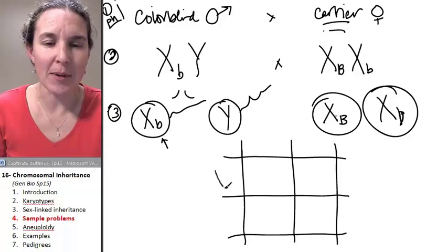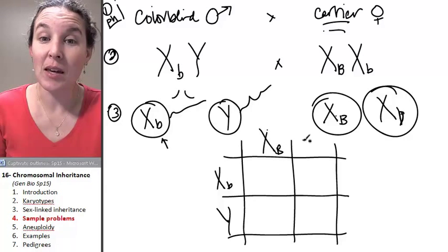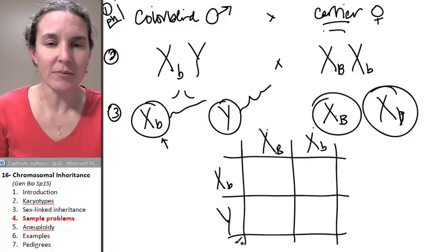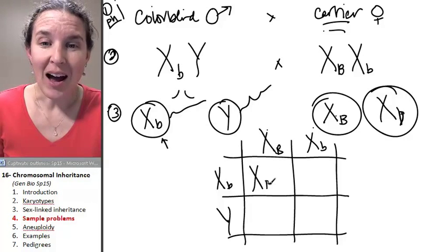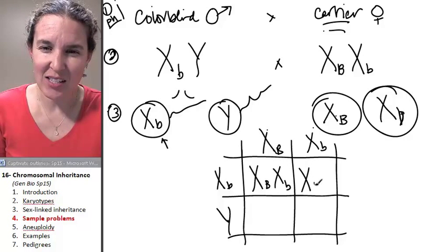All right. Let's throw our gametes in here. X little b, X, Y, this is my fella. X big B, X little b. I said X, Y over here, but there's no X. It's only a Y. Now, let's combine some sperm and eggs just for the fun of it. I always put my big Bs first because my brain just likes to read it that way better.